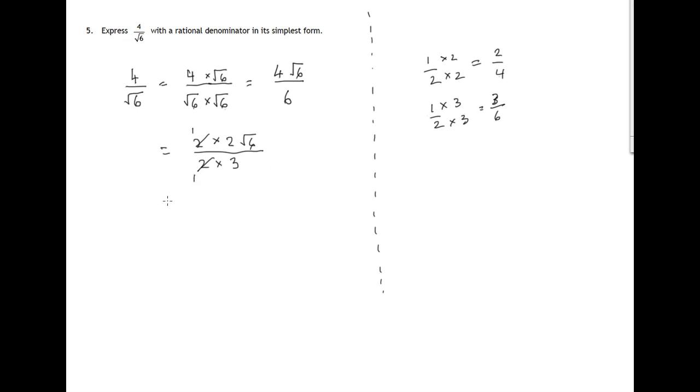So dividing top and bottom of this fraction by 2 gets rid of this common factor 2 and leaves us with 2 root 6 over 3, or two thirds of root 6.